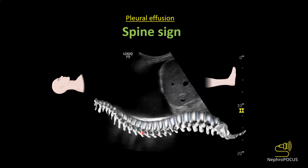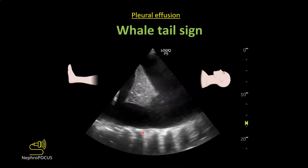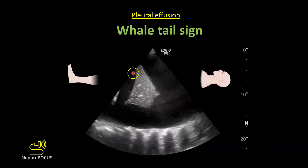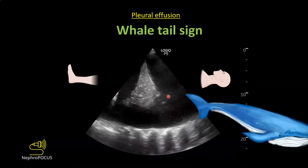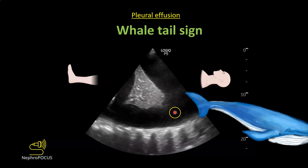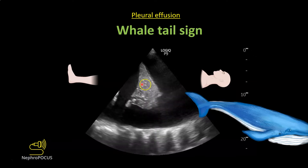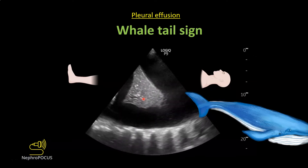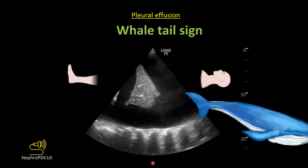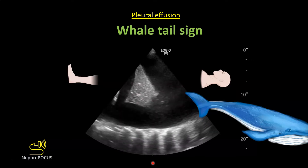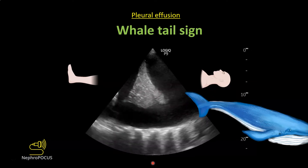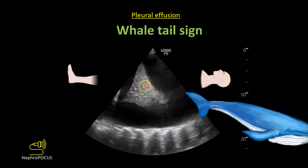This is called the spine sign or thoracic spine sign. With significant pleural effusion you will often see something floating within the effusion corresponding to atelectatic lung, because there is always some degree of compressive atelectasis with pleural effusion — this is called the whale tail sign or jellyfish sign. Note the bright pearly structures inside the atelectatic lung; these correspond to static air bronchograms. Air is white on ultrasound. These static bronchograms do not move independently with respiration even though the collapsed lung moves.